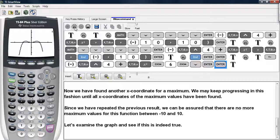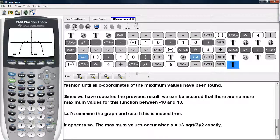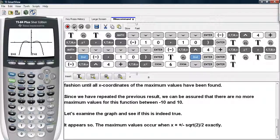And here we can see that we have two bumps. So it appears that we have two maximum values. And the maximum values have x-coordinates of plus or minus square root of 2 over 2 exactly. And our calculator approximates these values fairly well.